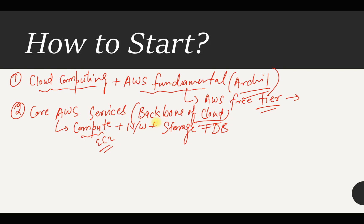For compute, you need to understand EC2 and other compute types. For networking, you need to understand VPC and other gateways that help connect different types of environments. For storage, S3 is very important, but there are other storage types as well. You also need to focus on database services — the Relational Database Service in AWS.